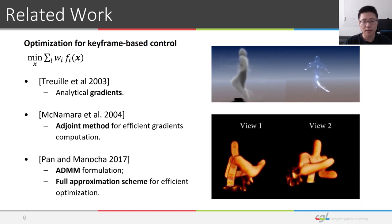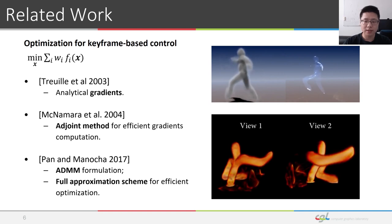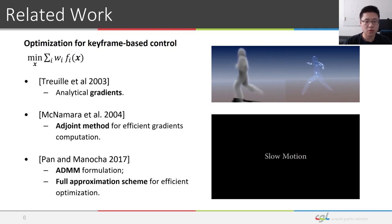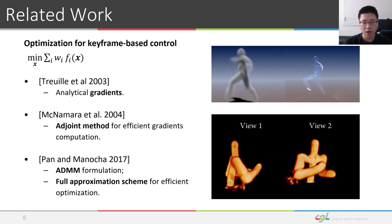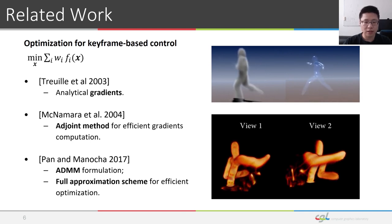Pan and Manocha formulated the keyframe-based control problem in the same way as McNamara et al., but proposed to solve the optimization by decomposing the optimization process into two parts, the advection optimization and Navier-Stokes optimization.